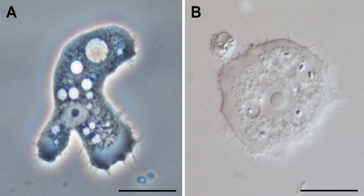Discosia is a class of Amoebozoa, consisting of naked amoebae with a flattened, discoid body shape. Members of the group do not produce tubular or subcylindrical pseudopodia, like amoebae of the class Tubulinia.